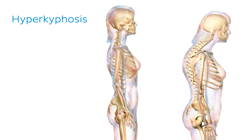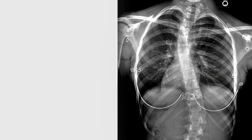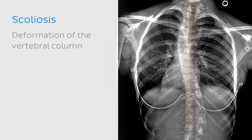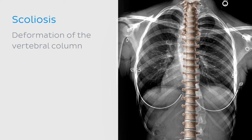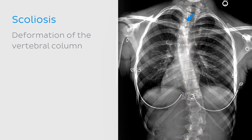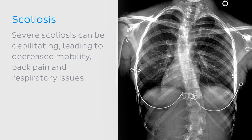Now that we're familiar with the thoracic and lumbar spines, let's get clinical. At the beginning of this tutorial, we briefly mentioned hyperkyphosis — a condition where the thoracic spine is more curved than normal, causing the back to appear rounded and hunched. In our clinical notes, we're going to focus on another abnormal curvature called scoliosis. Scoliosis causes deformation of the vertebral column; individuals develop lateral curvatures resulting in a C or S shape. Severe scoliosis can be debilitating, leading to decreased mobility, back pain and respiratory issues.